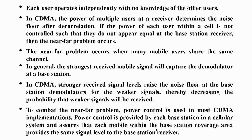The base station always focuses on the device nearer to it because it transmits with more power. Devices far away from the base station have their signal power reduced with distance, so the base station cannot listen to those far users. This is called the near-far problem. To combat it, power control must be implemented in CDMA.